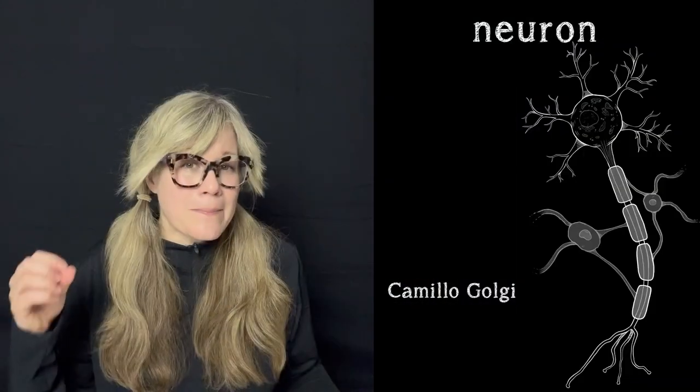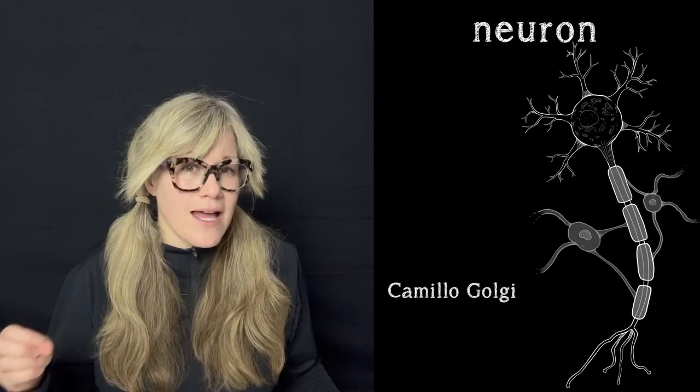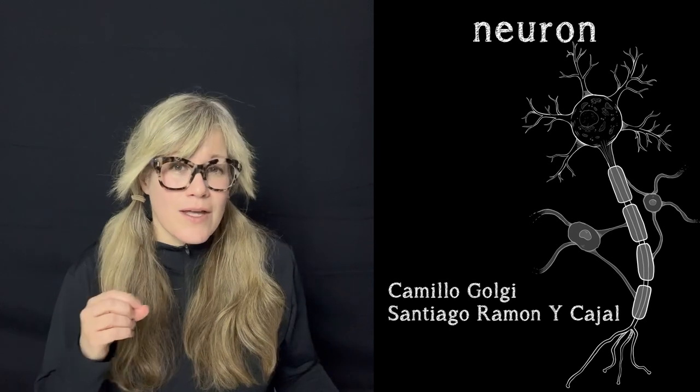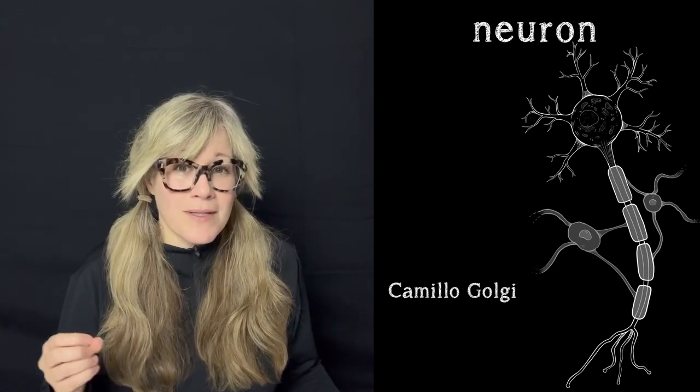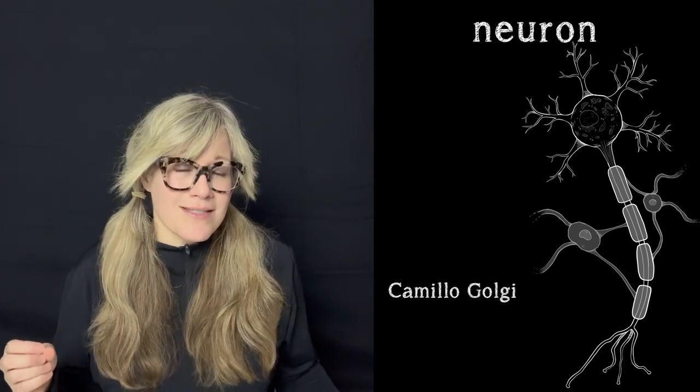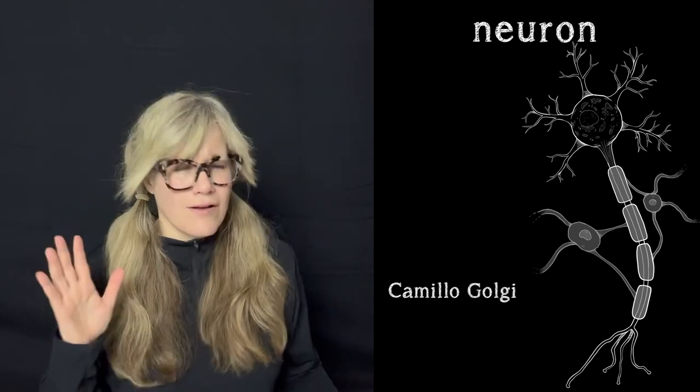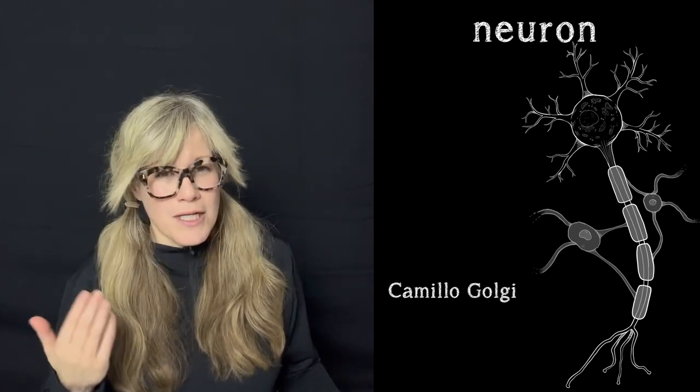We can't really begin to discuss neurons without first mentioning two men who share a Nobel Prize for their independent contributions to our understanding of neuronal morphology. They are Camillo Golgi and Santiago Ramón y Cajal. You'll recognize Camillo Golgi from the last episode on cell physiology as the discoverer of the Golgi complex, also called Golgi apparatus.